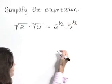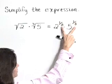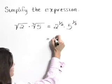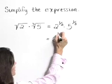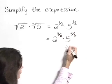Now, as a next step, I'm going to look at those exponents and get a common denominator with those. A common denominator for 2 and 3 is 6. So let's write this as 2 to the three-sixths times 5 to the two-sixths.